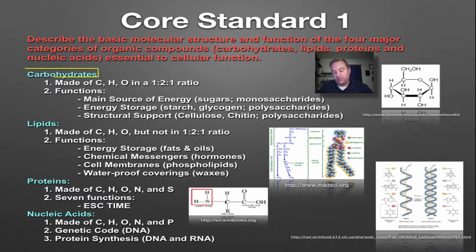Core standard number one deals with what are the biomolecules and what do they do. The biomolecules are carbohydrates, lipids, proteins, and nucleic acids. Carbohydrates are made out of only three atoms: carbon, hydrogen, and oxygen, typically found in a ratio of one to two to one. Typically two hydrogens for every oxygen, that's where the hydrate word comes from.